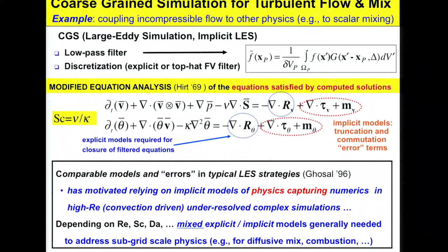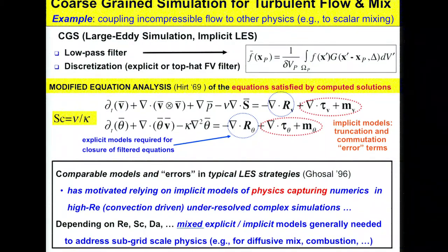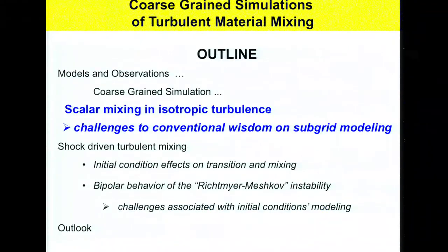In general, you need a mixture of explicit and implicit models — for example, if you have to address diffusive mixing, combustion, or low Reynolds numbers. The important thing is that you need a framework, and modified equation analysis gives you that framework.